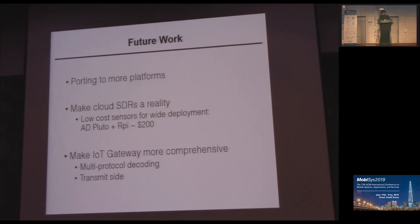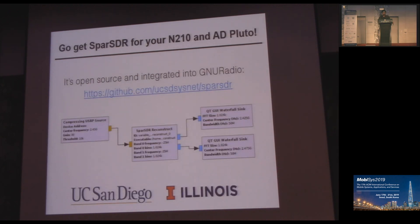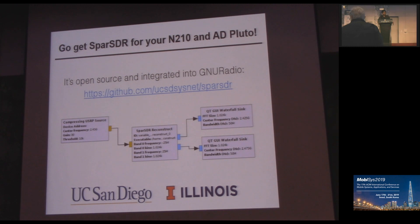We are going to enable multiple protocol decoding and also add the transmit side. To use Sparse SDR, you can go to this link, download the FPGA bin file and the GNU Radio block, put the GNU Radio block in your workflow, and start collecting data. Thank you, and I can take any questions.